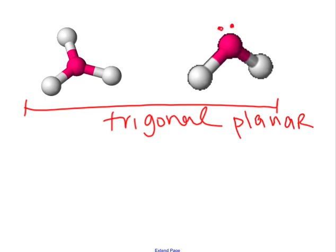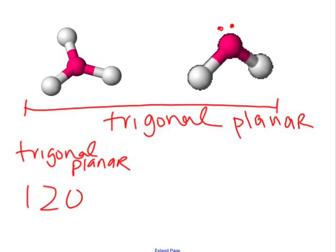Here we have a lone pair. Starting out, if we have these three areas, the name of this geometrically is the same as the name of the family since all the areas are bonded. So this is also trigonal planar. A circle is 360 degrees around. We're cutting it in three. What is the bond angle? 120, correct.